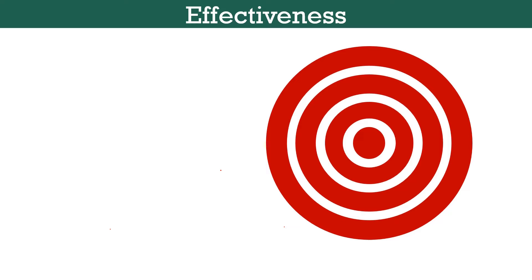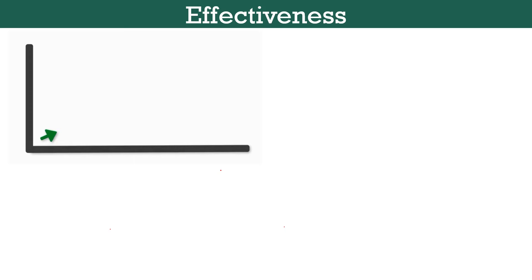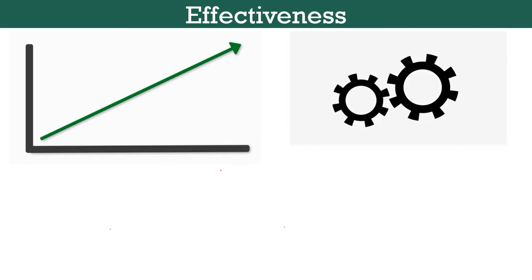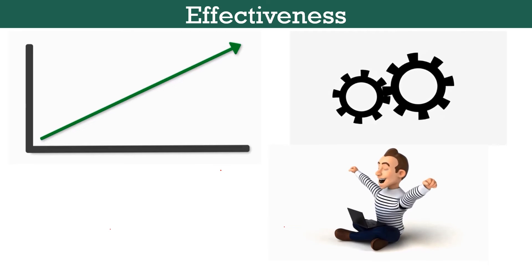Coming to effectiveness, in general effectiveness is the degree to which defined objectives are met. It is the power to produce the desired outcome. One must note that effectiveness is the result of wise choices. It involves efficient use of resources. It is the extent to which policy results can be achieved, and these policies encompass objectives that are to be attained in the coming time.